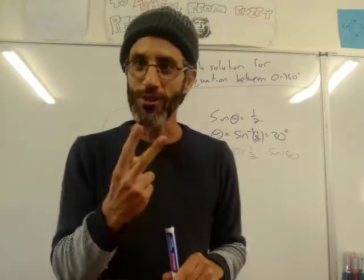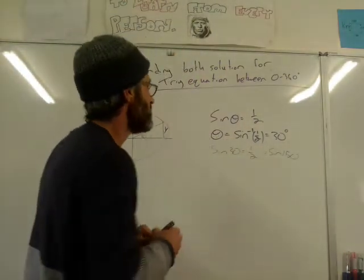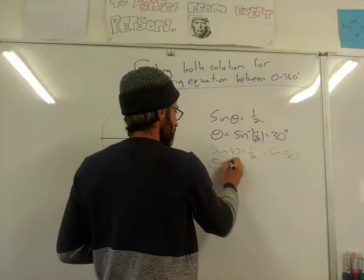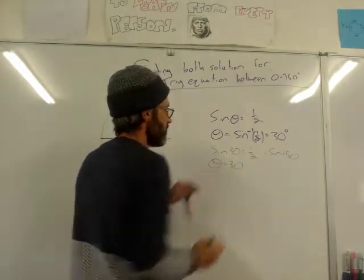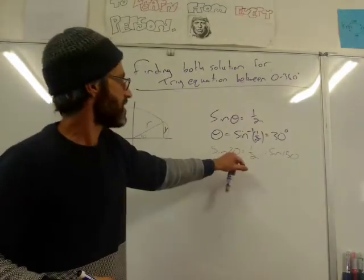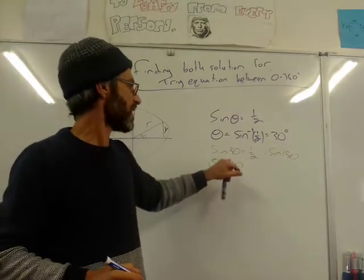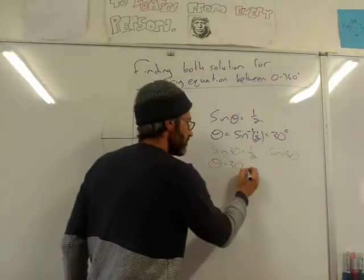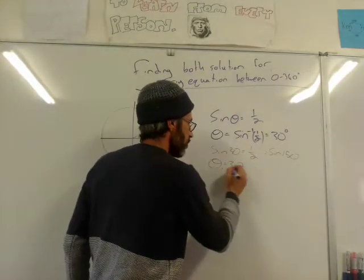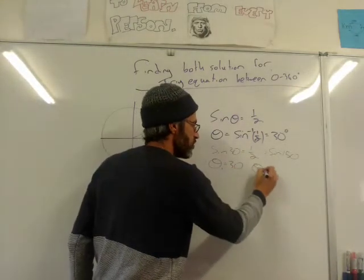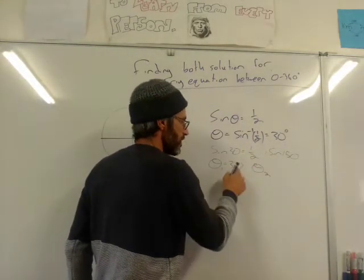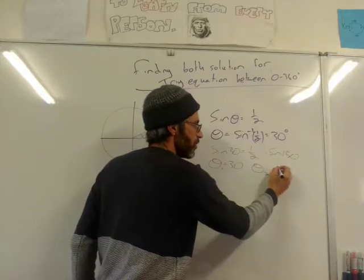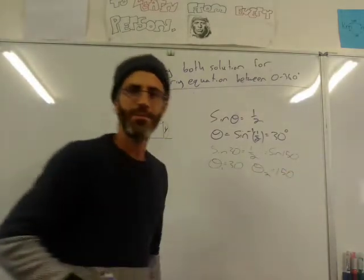So it looks like there are two solutions. The first solution is 30 — if I do sine 30, I'll get a half. But there's another solution. I'll call it theta 2. So theta 1 is 30, and theta 2, the second solution, is 150.